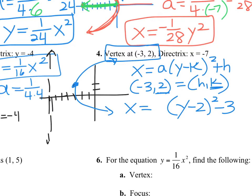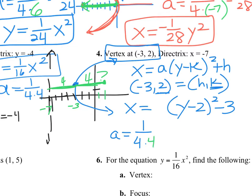Now let's find a. A equals 1 over 4 times c. I don't have the focus, but I have the distance from the vertex to the directrix — from x equals negative 3 to x equals negative 7 is a distance of 4. So c equals 4, meaning a equals 1 over 16. The equation is x equals 1 over 16 times (y minus 2) squared minus 3.